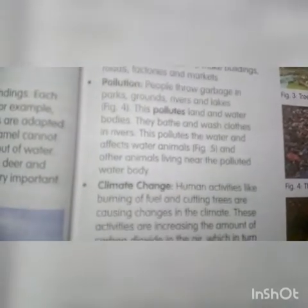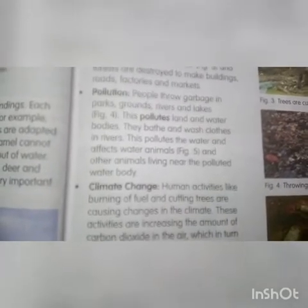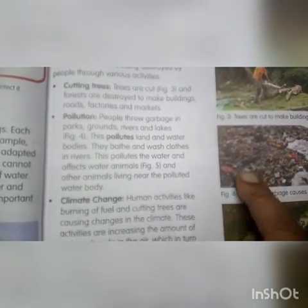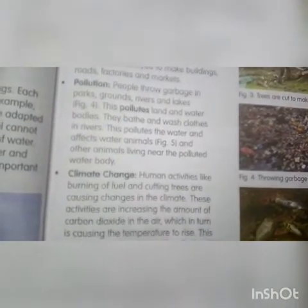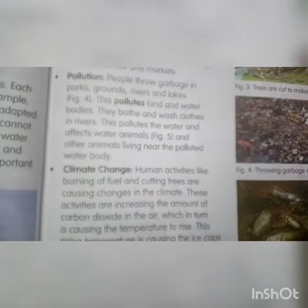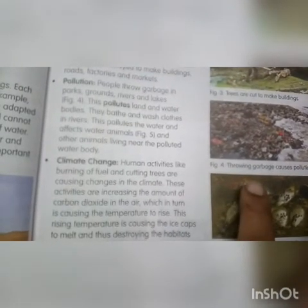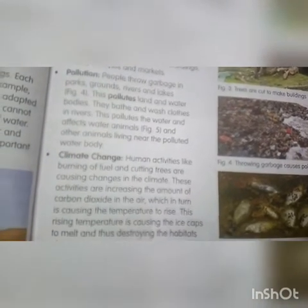Second activity is pollution. People throw garbage in parks, grounds, rivers and lakes — see in figure number 4. बहुत सारा garbage rivers में, lakes में फेंकते हैं लोग, and this pollutes land and water bodies. They bathe and wash clothes in rivers. This pollutes the water and affects water animals। तो इसके वजह से जो पानी में रहने वाले जानवर हैं उनके ऊपर effect होता है, और other animals living near the polluted water body भी प्रभावित होते हैं।